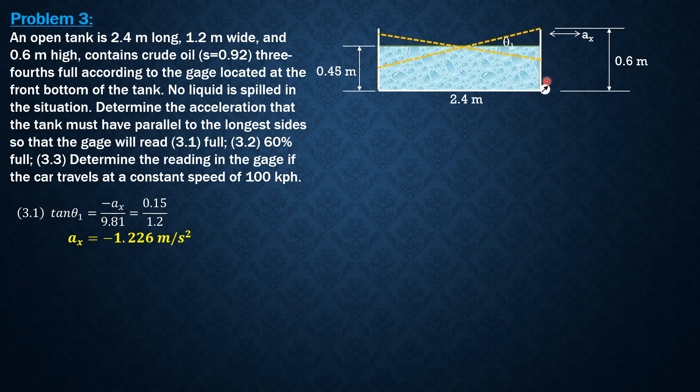So if it reads 60% full, 60% or 0.6 of 0.6—because the full reading is 0.6—60% or 0.6 of 0.6 is 0.36.